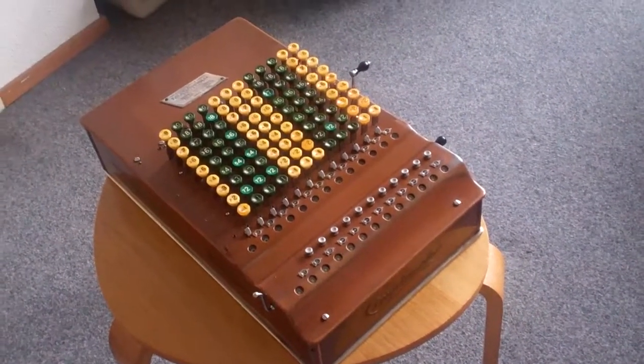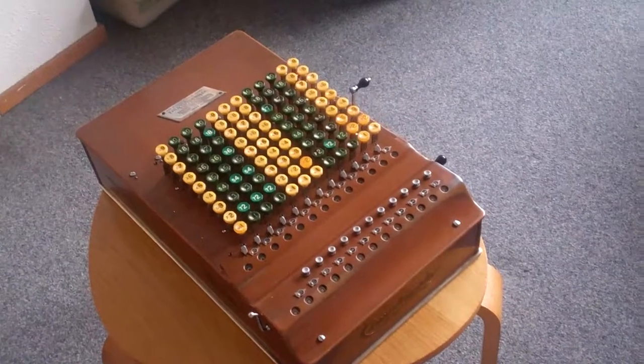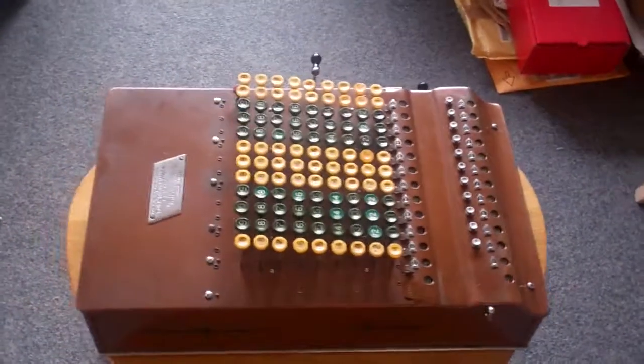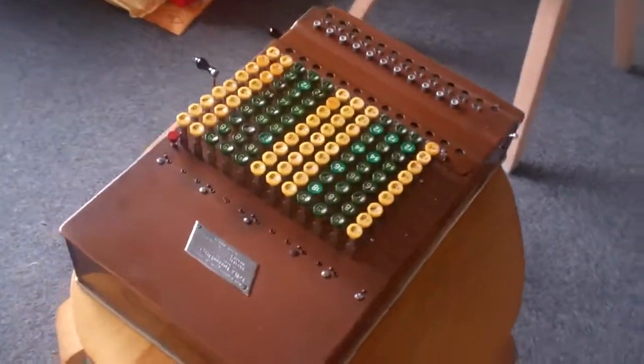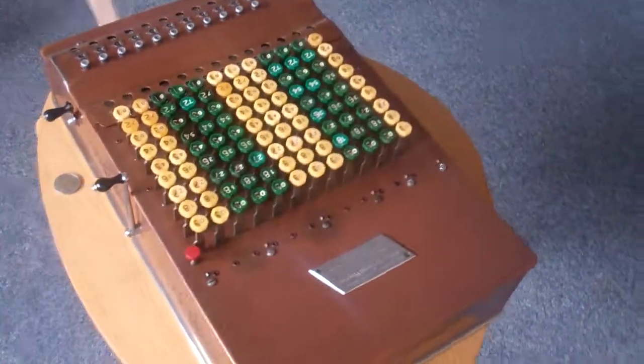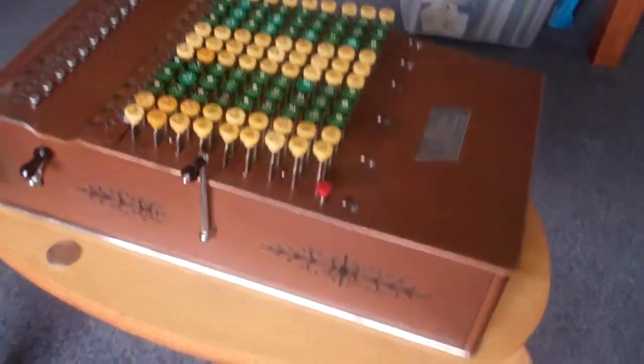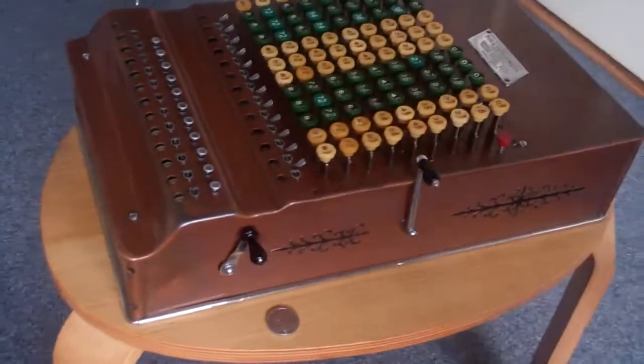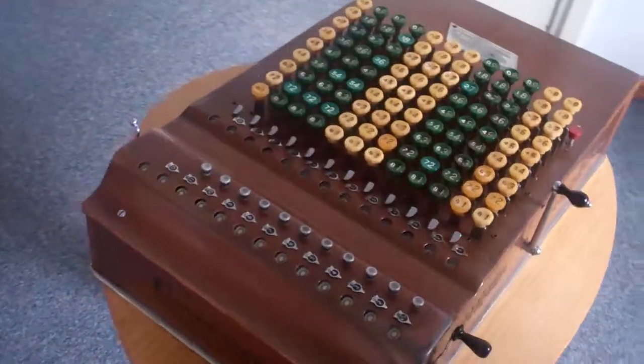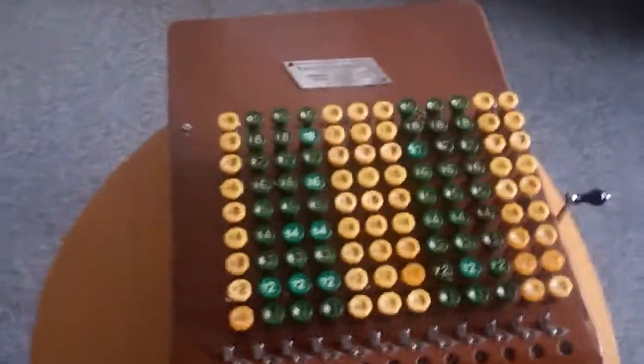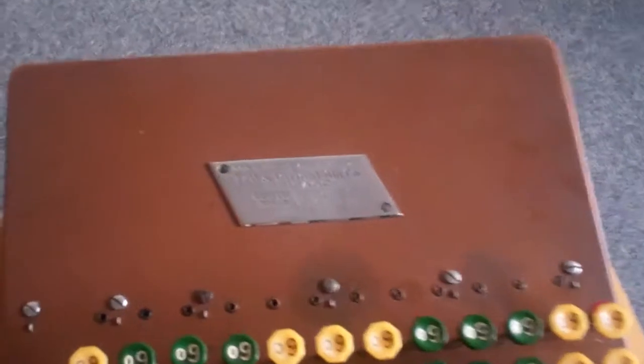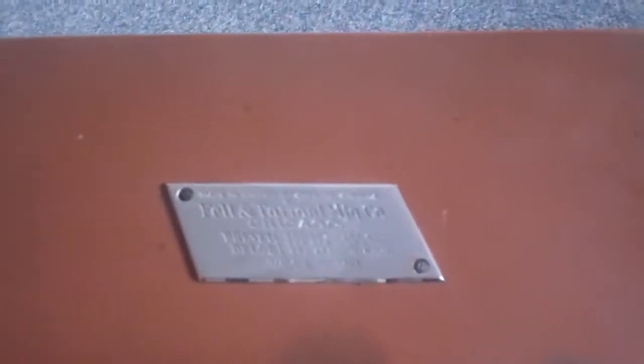This is a mechanical calculator called the Comptometer. It was made by Felt and Tarrant in America. Although this version has a Belgian plate on it because it was sold in Belgium.